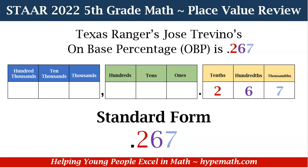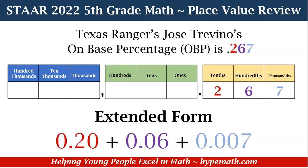For standard form, it's the normal number — how we write it — so it will be 0.267. Now let's see how we write it in expanded form. One way is: 0.200 — you can include the trailing zero or leave it out, it means the same thing — plus 0.060 plus 0.007. If you look at our place value chart, you'll notice that the number of decimal places matches the place value chart.